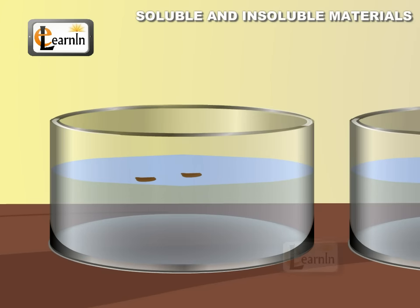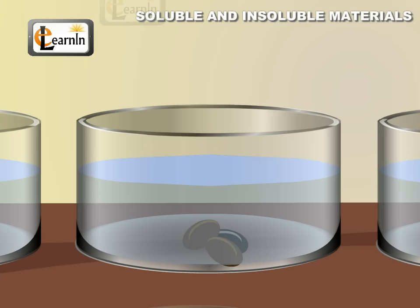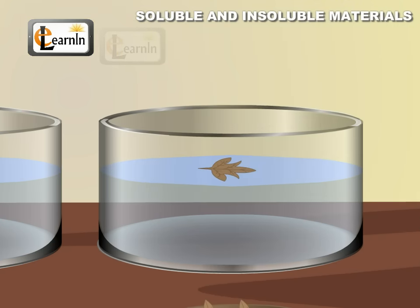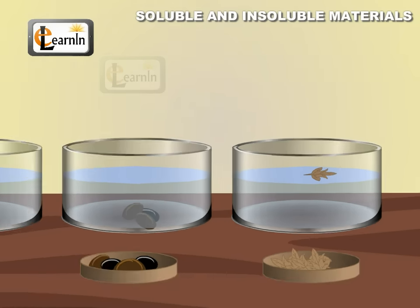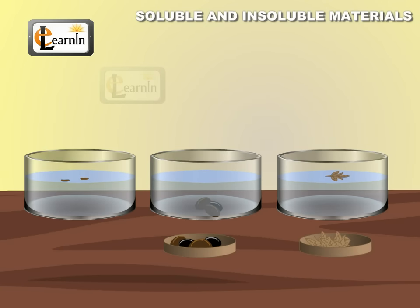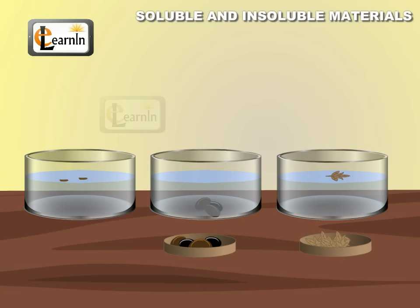Observe that oil floats on water and forms a separate layer. The pebbles sink in water and settle at the bottom of the glass. The dry leaves float on water as they are very light. This demonstration gives us an idea about objects that sink and float.